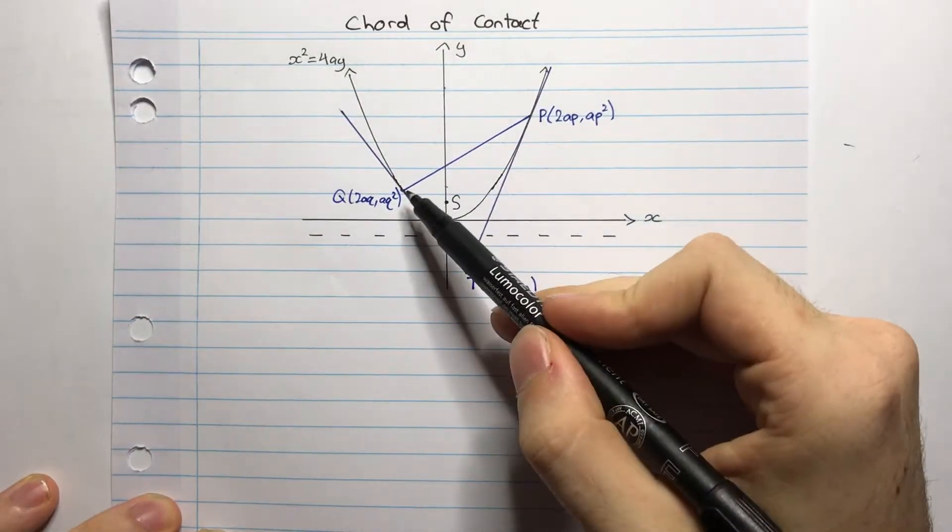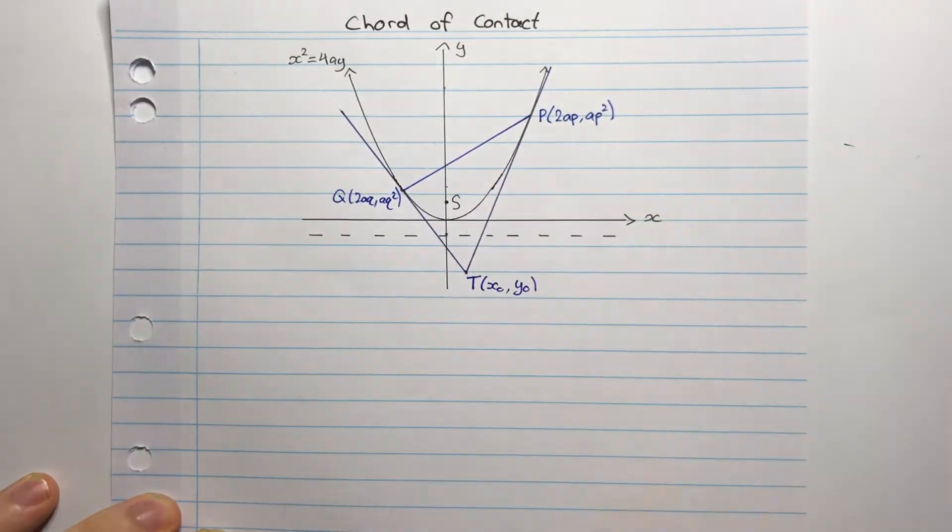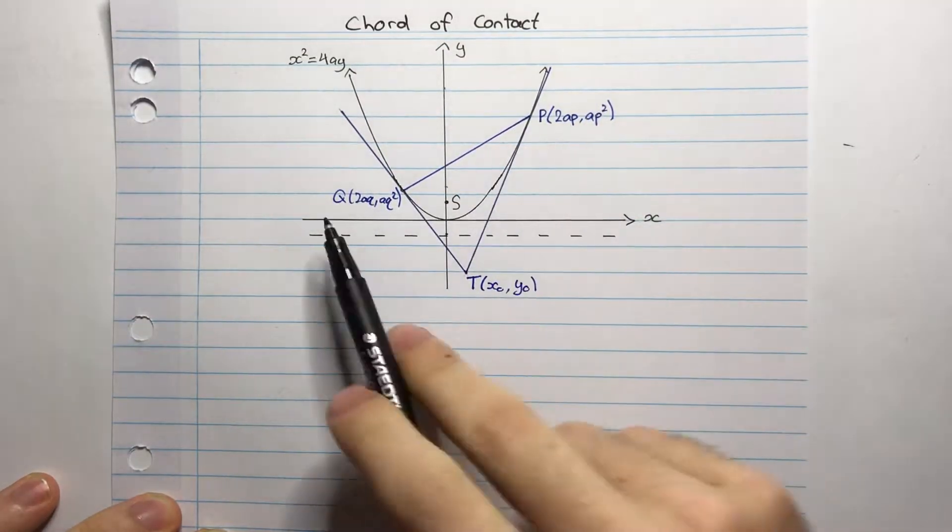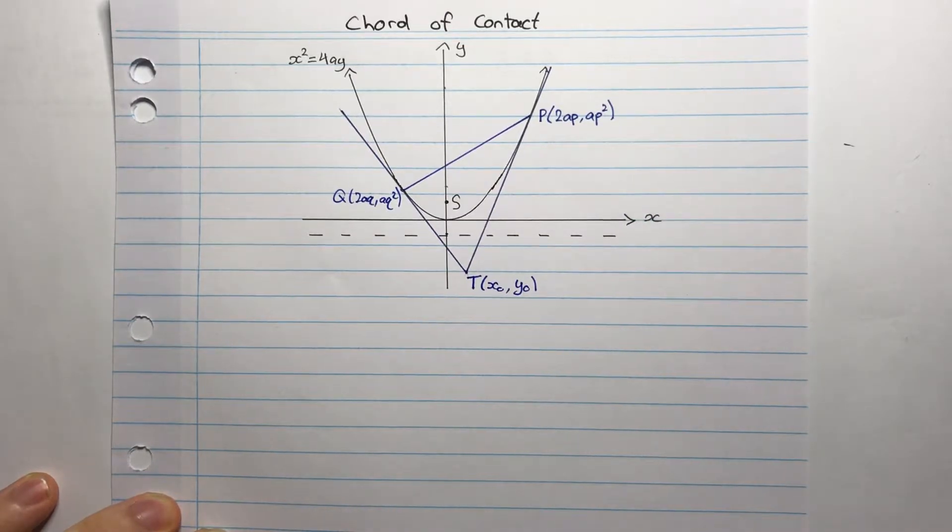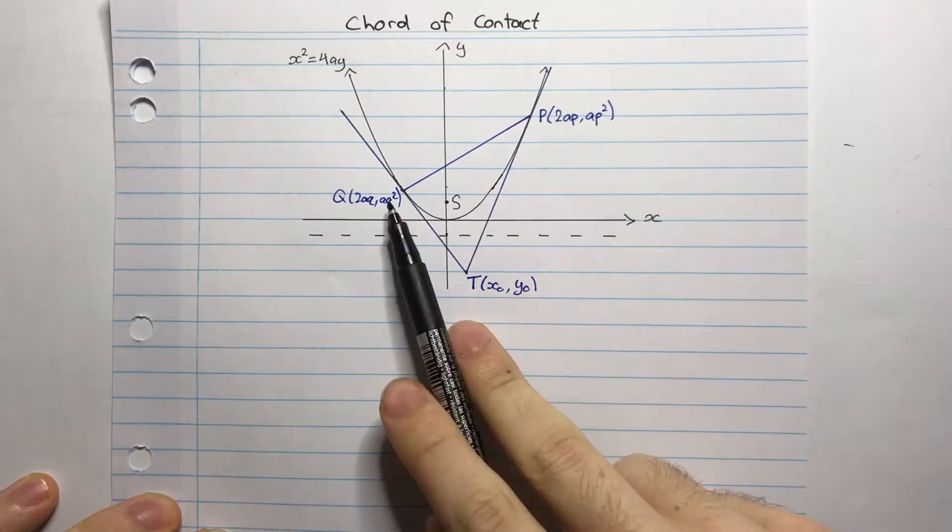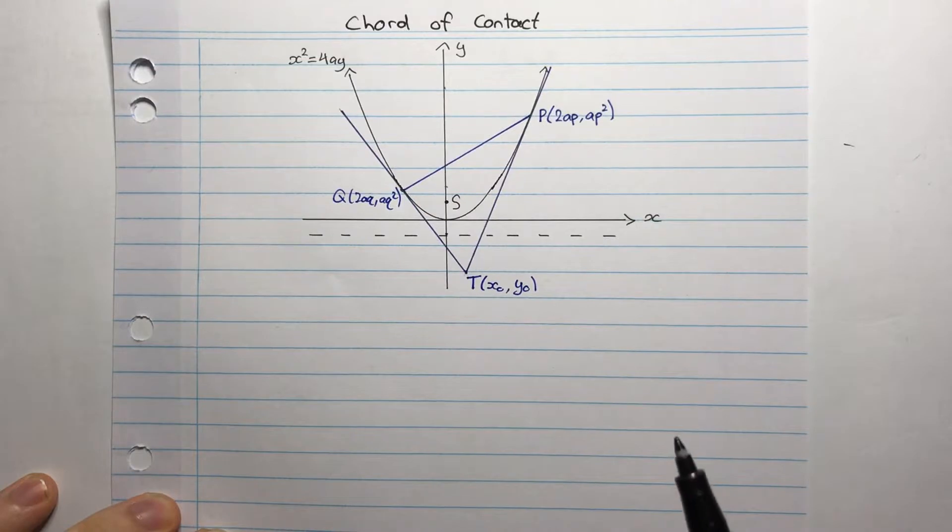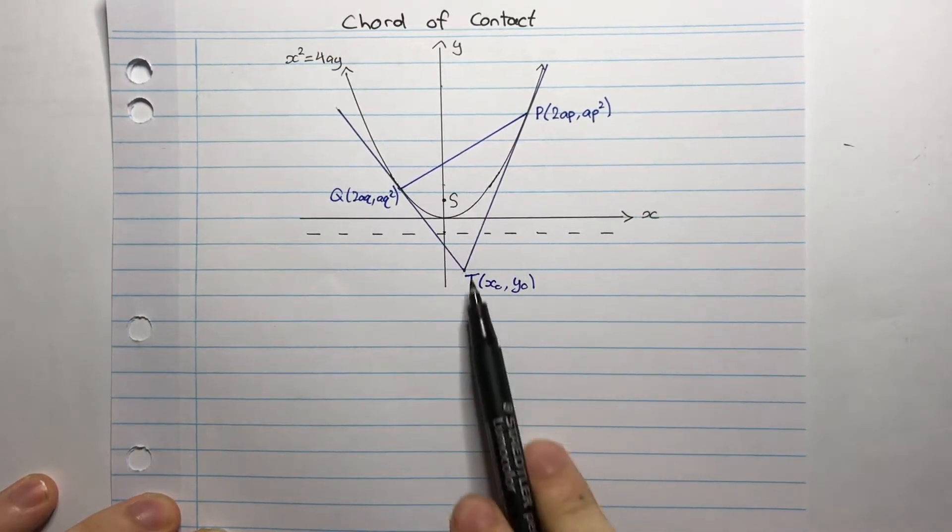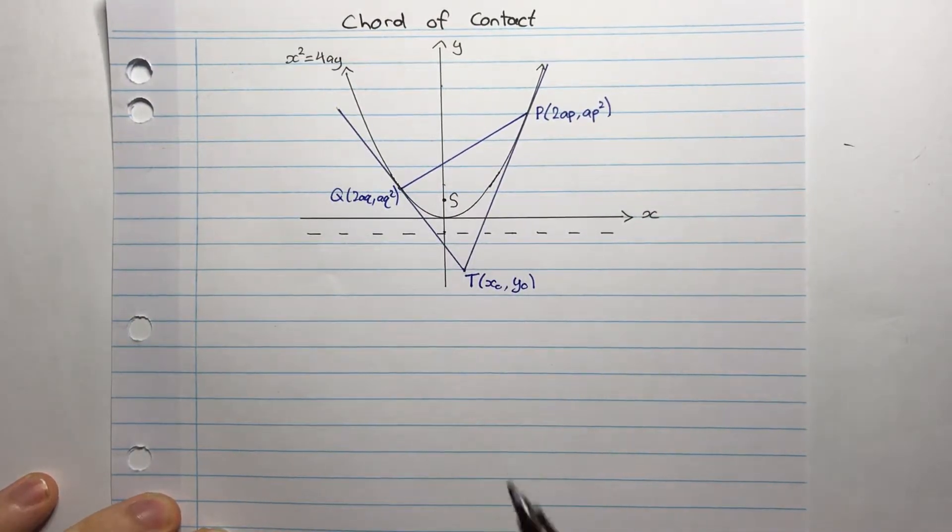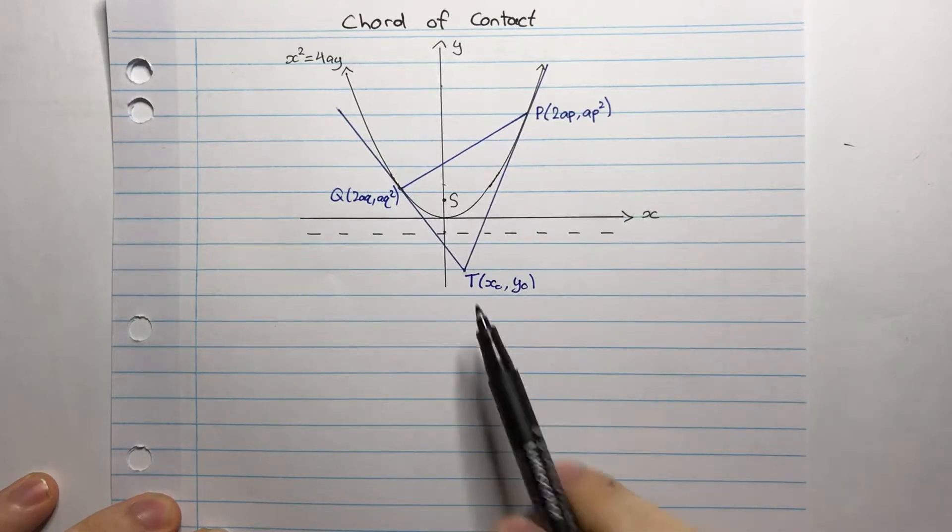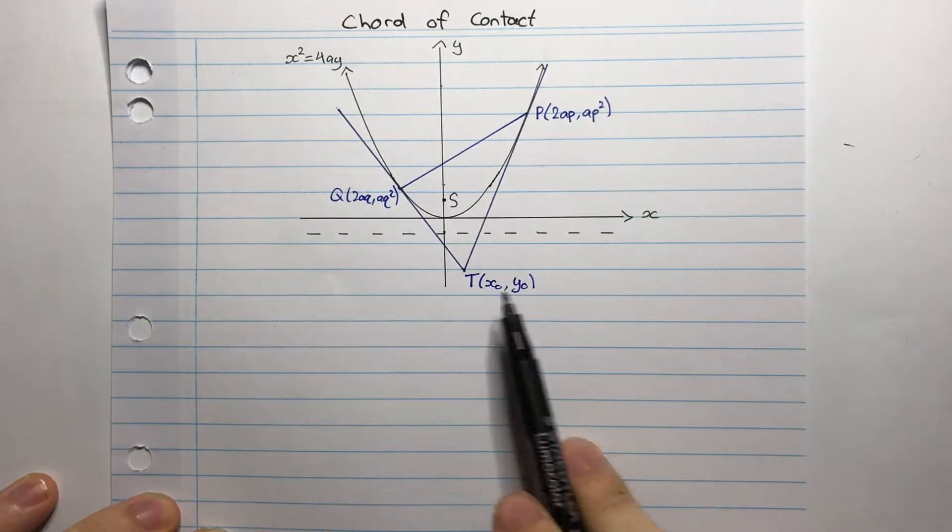Now the chord of contact is the chord which joins these two points, P and Q. Now I want to find the equation of this chord of contact. So you'd think that I just find the equation of the chord PQ, but not really. The chord of contact is defined by this exterior point. So I want to find the equation of that chord of contact in terms of x0 and y0.